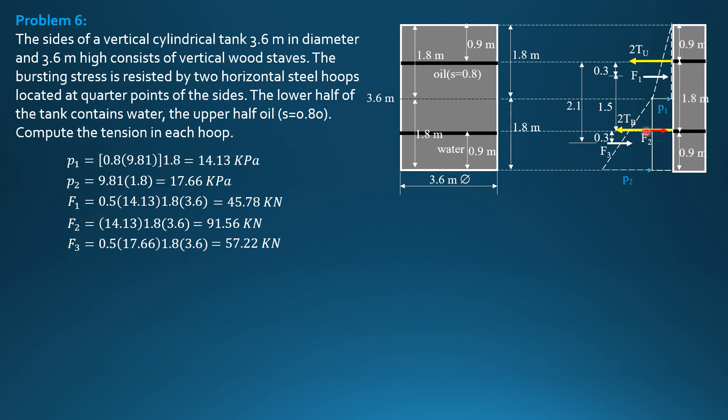Summation moment about the bottom hoop equals zero to compute for the tension in the upper hoop or stress in the upper hoop. So 2 times T sub u times 1.8 plus F3, which is 57.22 times 0.3, equals F1, 45.78 times 1.5 plus F2 times 0. There's no need to mention F2 because its moment arm is zero. So we can now compute tension in the upper hoop, 14.31 kilonewtons.